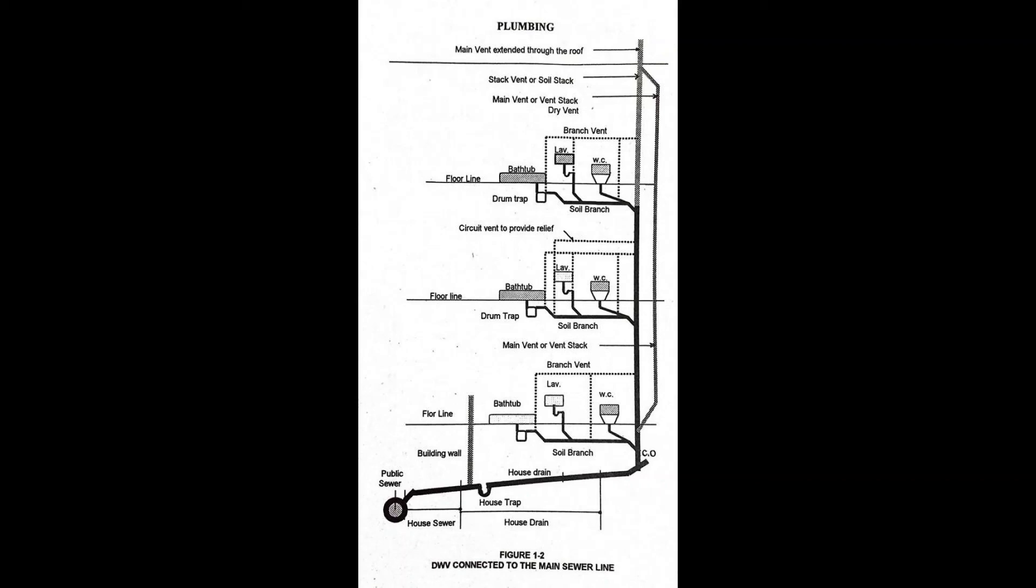Trap seal is the maximum vertical depth of liquid the trap will retain, measured between the crown weir and the top of the dip of the trap.